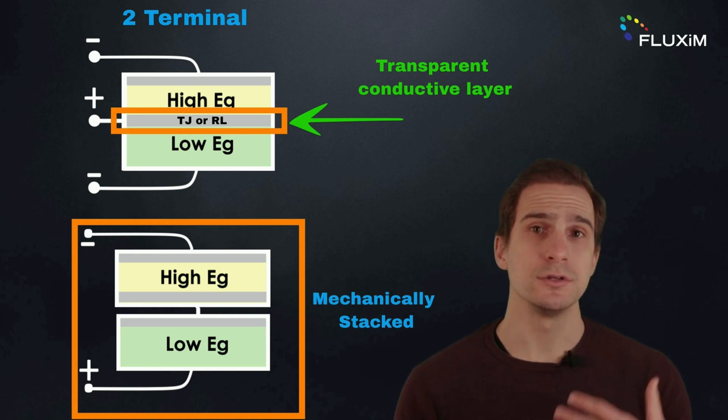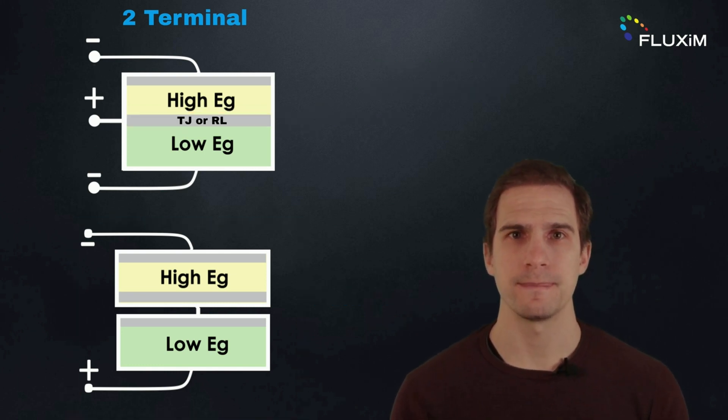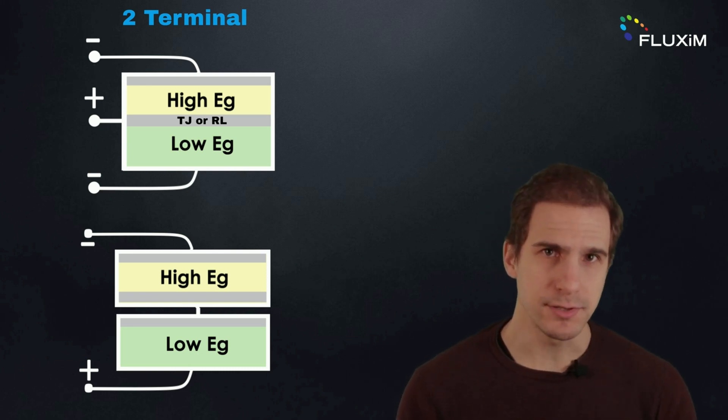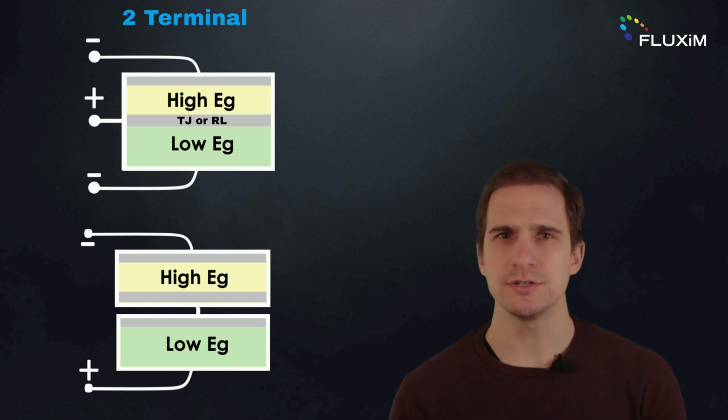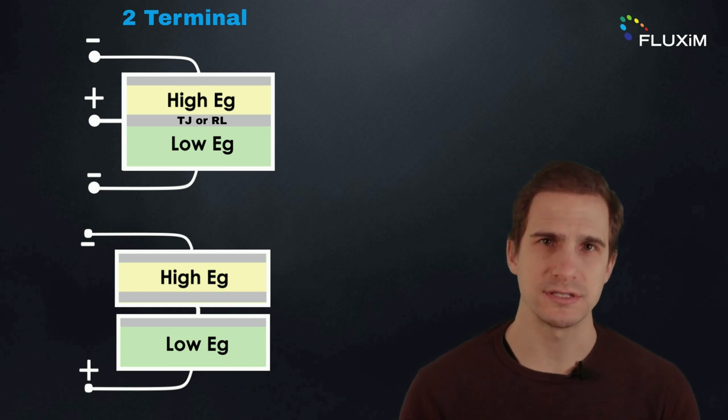This configuration requires less wiring and it's simpler to install, but the fabrication process is challenging, since the top cell must be deposited without damaging the bottom cell. Additionally, with daily and seasonal variations of the solar spectrum, the current matching requirement is not always satisfied.